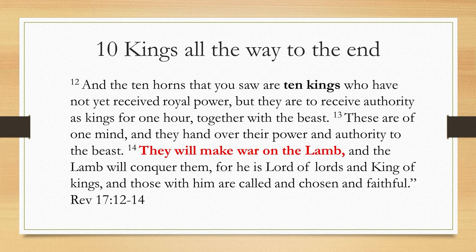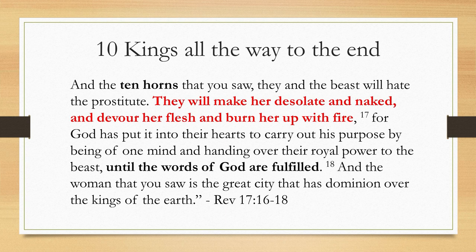In Revelation 17:12-14 it says: 'And the ten horns that you saw are ten kings who have not yet received royal power, but they are to receive authority as kings for one hour together with the beast. These are of one mind, and they hand over their power and authority to the beast, and they will make war on the Lamb, and the Lamb will conquer them, for he is Lord of lords and King of kings.' And further: 'The beast and the ten horns will hate the prostitute, make her desolate and naked, devour her flesh and burn her with fire, for God has put it into their hearts to carry out his purpose by being of one mind and handing over their royal power to the beast until the words of God are fulfilled.'